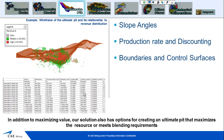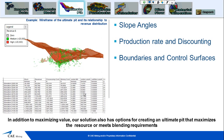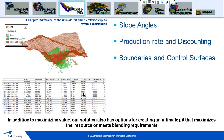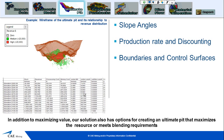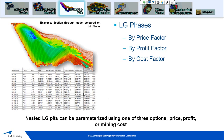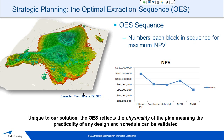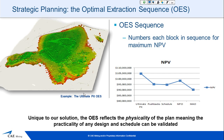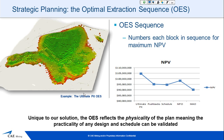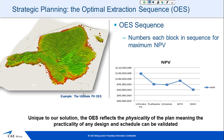We also have a different search algorithm that, instead of trying to optimise NPV, will schedule blocks together to meet blending requirements. Once we've generated our LG phases, we're able to see them. The LG phases can be by price factor, profit factor, or cost factor. With the LG phases generated, we then get what is specific to NPV Scheduler: the Optimal Extraction Sequence. From the ultimate pit on, the OES is generated and feeds the next stage of the process.